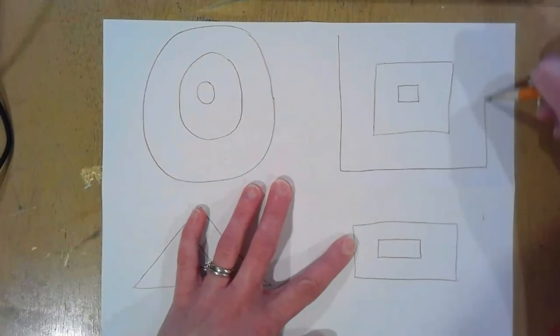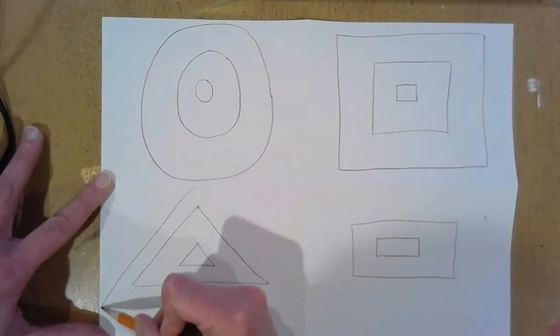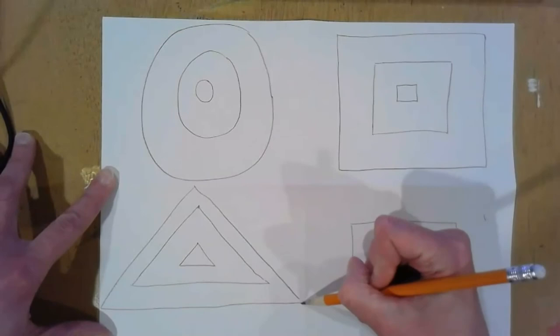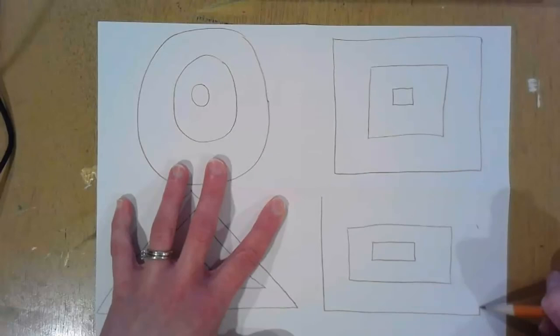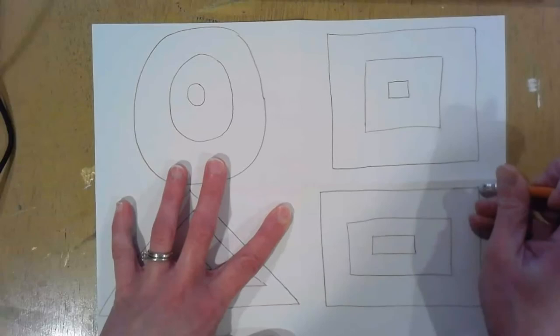One more really big circle. One more really big square. One more really big triangle. And oh boy, I got really close to the side of that box. I don't want to escape that space that I made with my folds. And one big, really big rectangle.